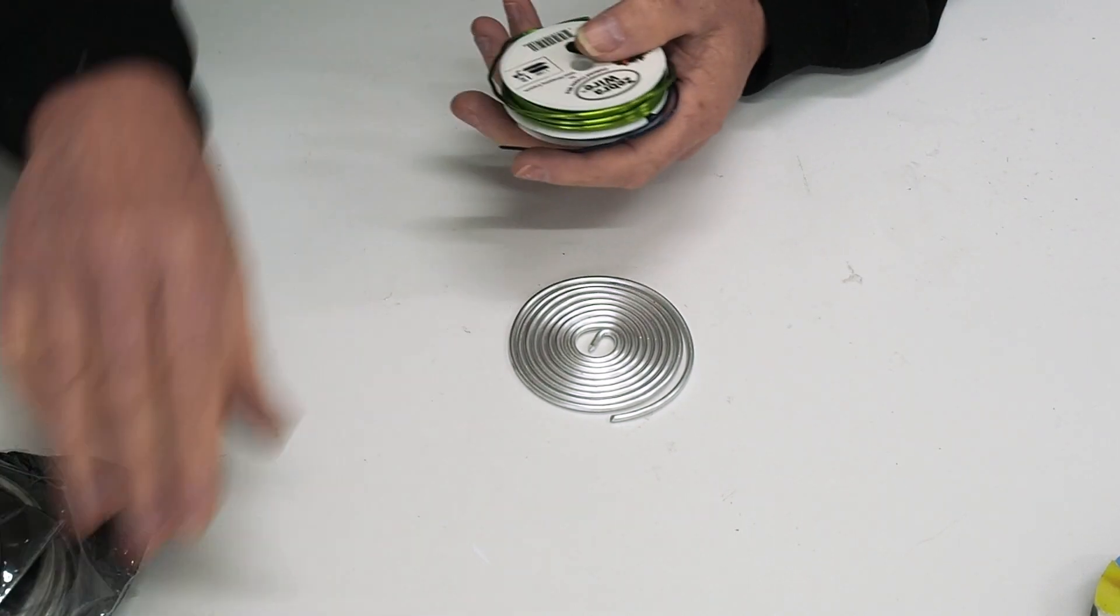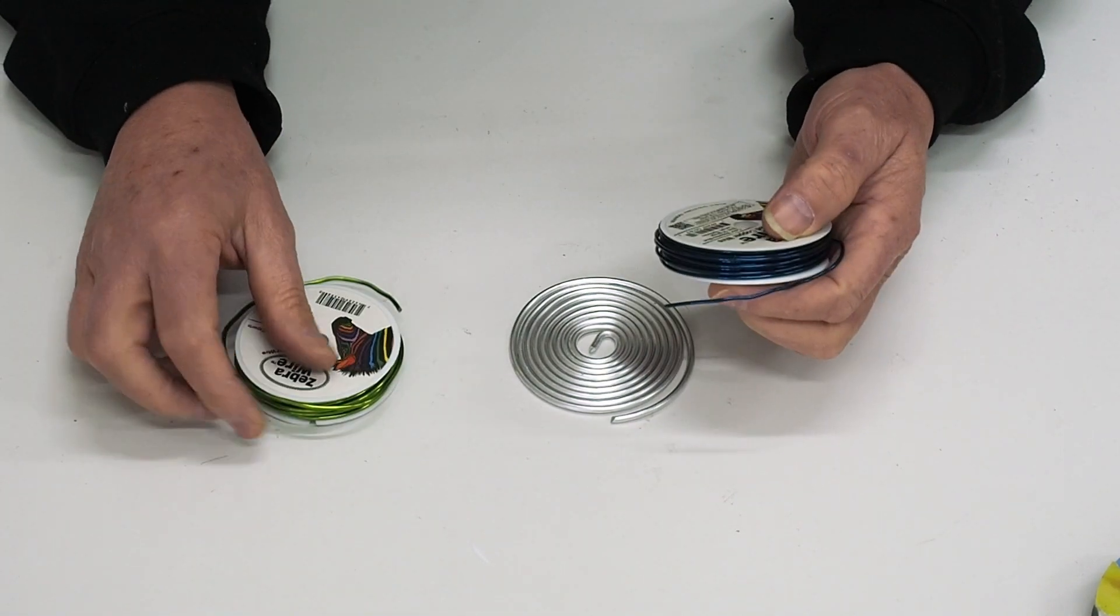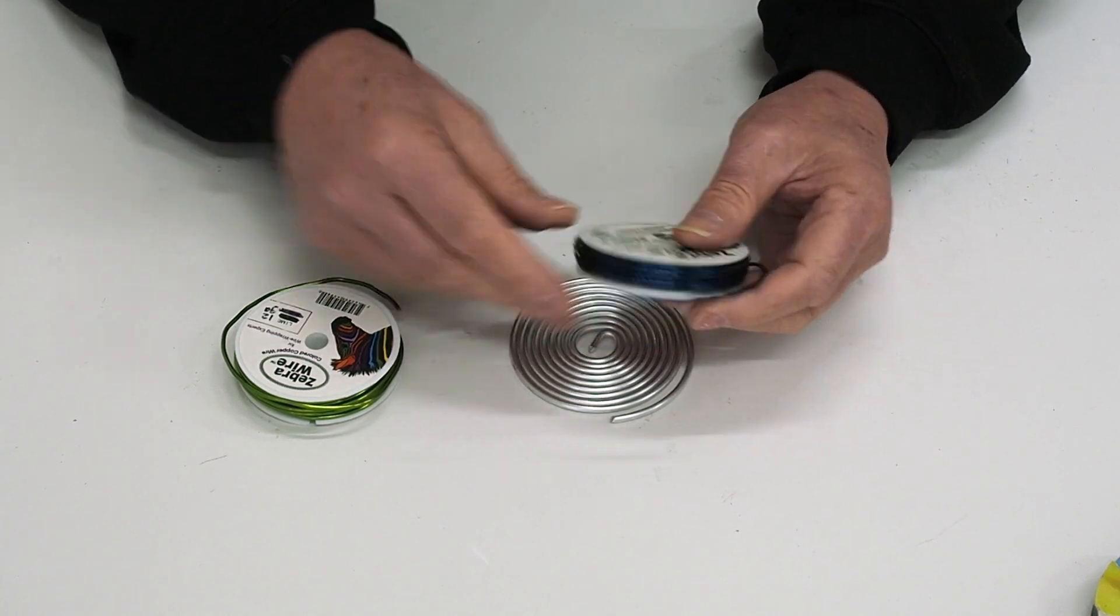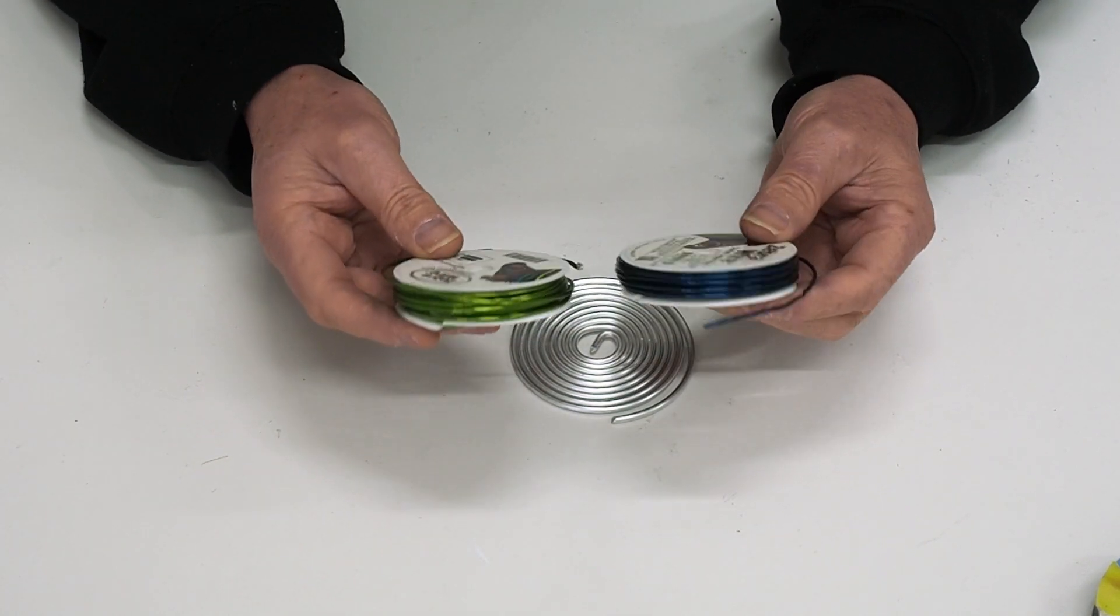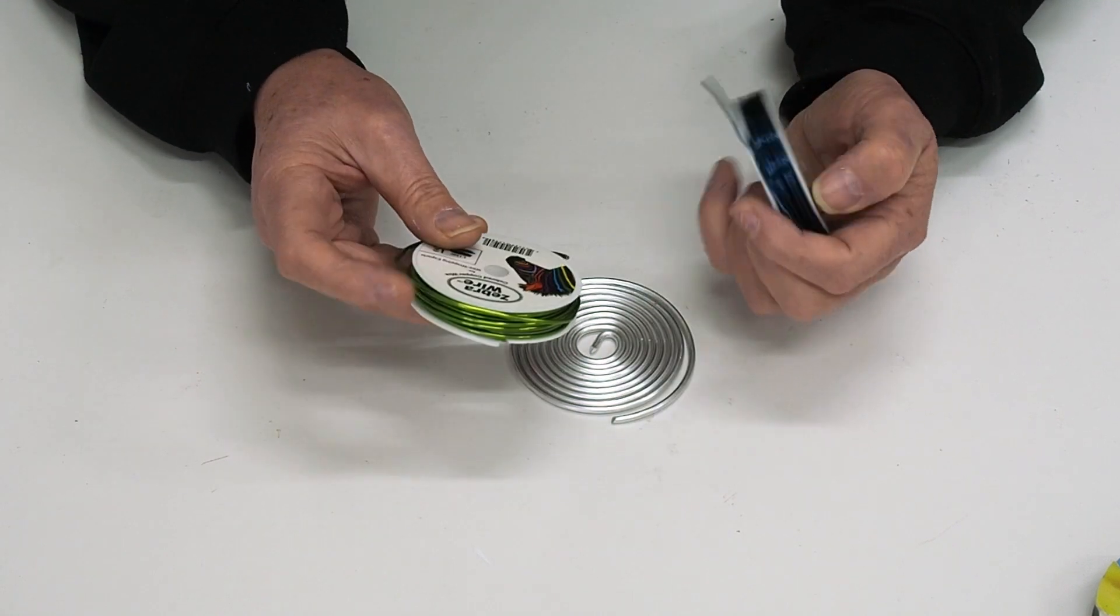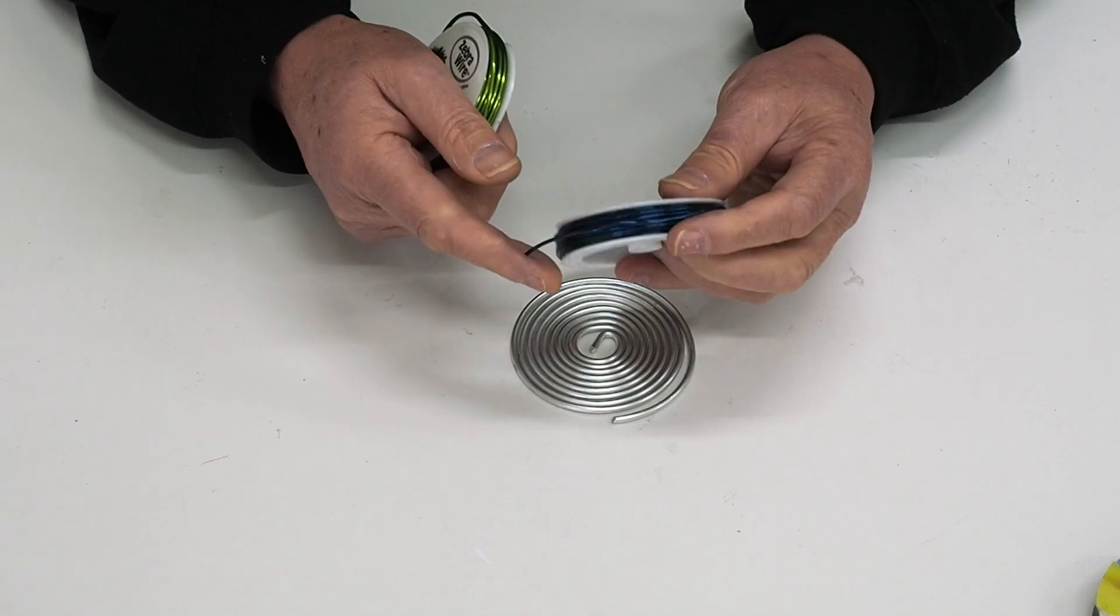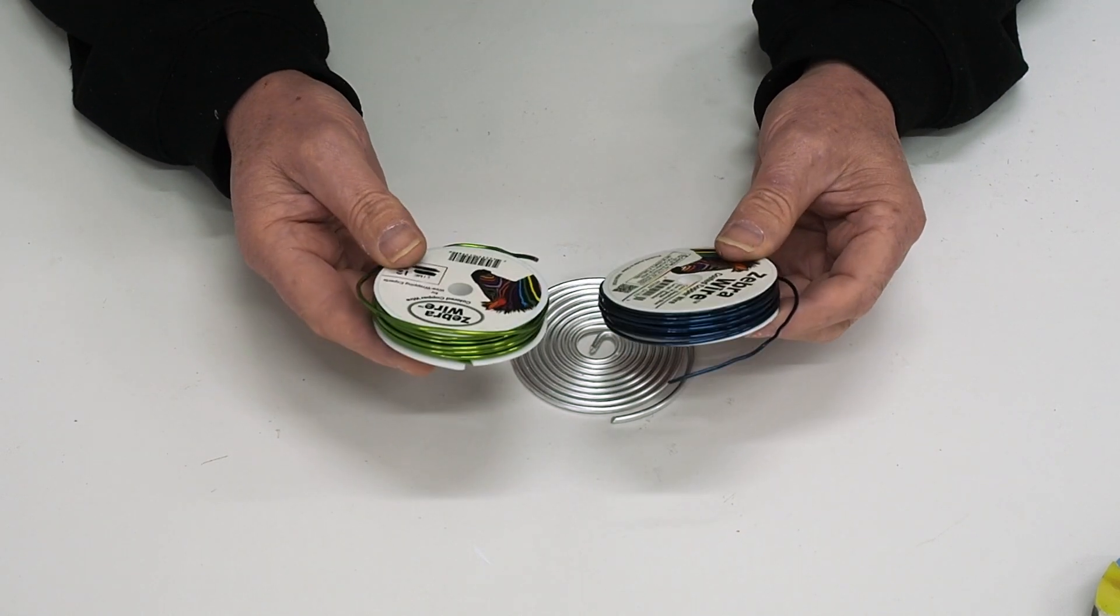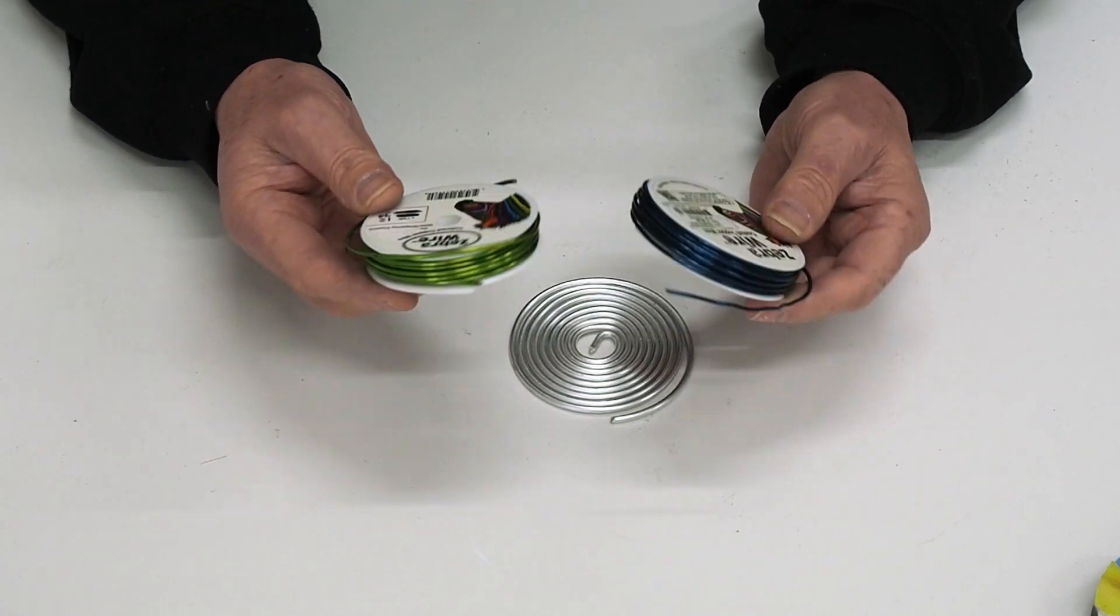There are other wires also available. For instance, this one here is a coated copper wire and these come in different colors. I've got two here—this one is slightly thicker than this one, but both are still very easy to bend and manipulate.